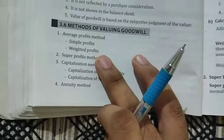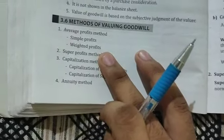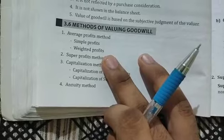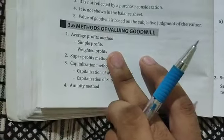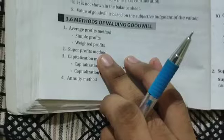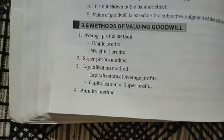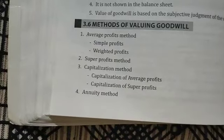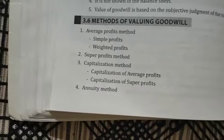For the weighted profit method, it's the total product divided by total weight to get the weighted average profit. For the super profit method, there is a specific formula which we will look at now.